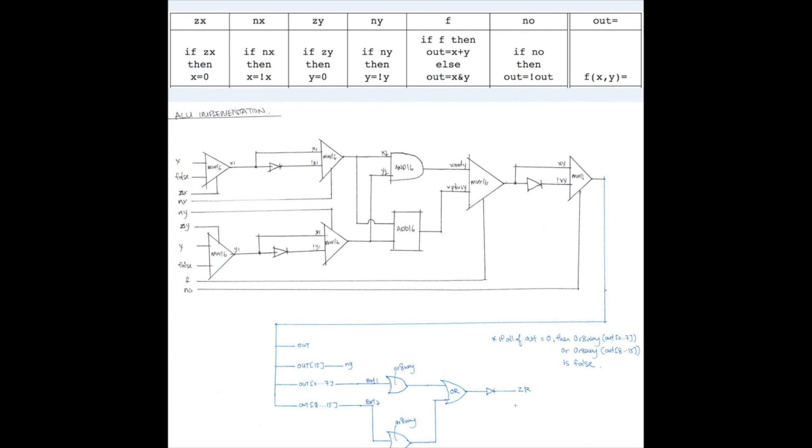So that ends our workshop looking at the diagram of the ALU implementation. Now once you realize this is how we work, whenever you have an IF, you know that we're using MUX gates.